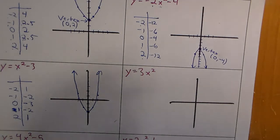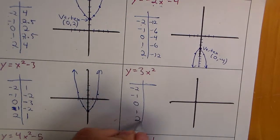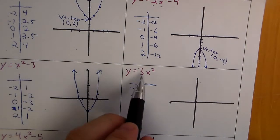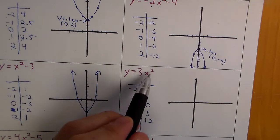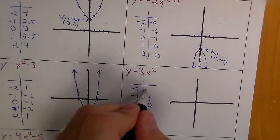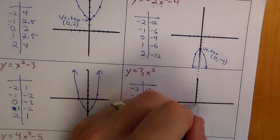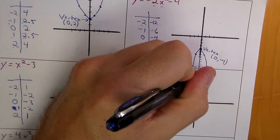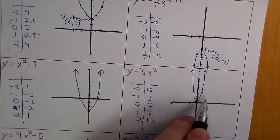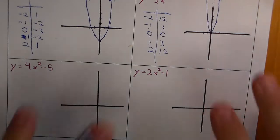For 3x²: no constant added, so it should start at the origin. The 3 makes it more narrow, and it opens up since it's positive. Computing: x = 0 gives 0; x = 1 gives 3; x = 2 gives 12, which is off the grid, so the parabola gets very steep. Really, if you have the vertex and a point on either side, that's enough for a basic sketch. If more detail is needed, plug in points or use a graphing program.